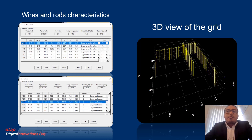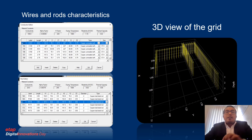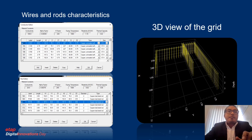ETAP also shows a 3D view of the ground grid, which is very useful to visualize how the grid is going to be built in real life — this actually helped us a lot during construction. This view can be rotated 360 degrees, as you can see here in yellow. This view can also be exported to a PDF document.